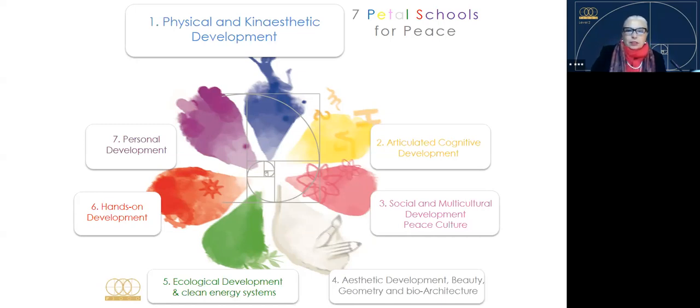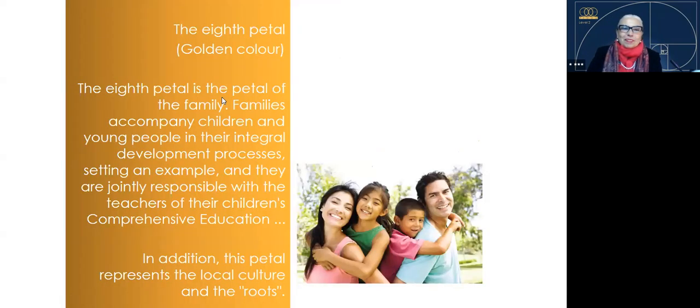So what we decided to do is to have an extra petal and we call it the eighth petal and it's golden in color. And we call it the petal of the family. Families accompany children and young people in their integral development processes, setting an example. The extended family is in charge of giving a nice contention, a nice environment, safe environment, emotionally safe, loving, caring, because that keeps a good start in life. How do I do? Let me show the example.